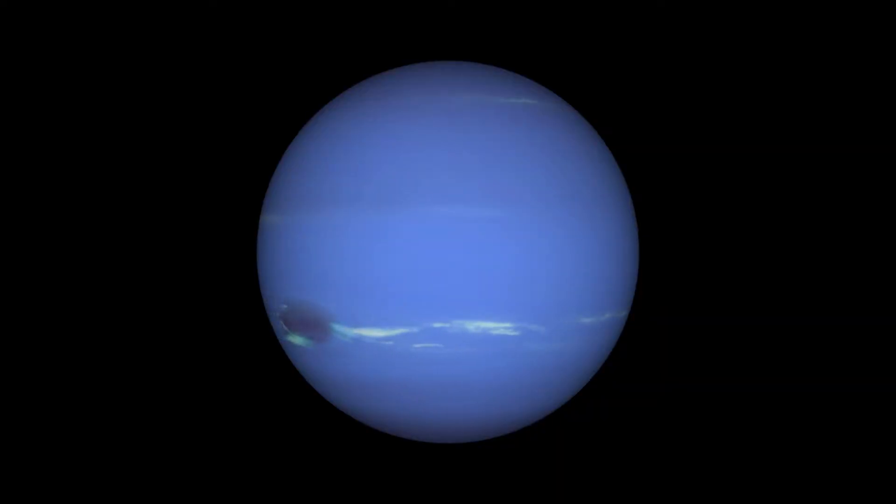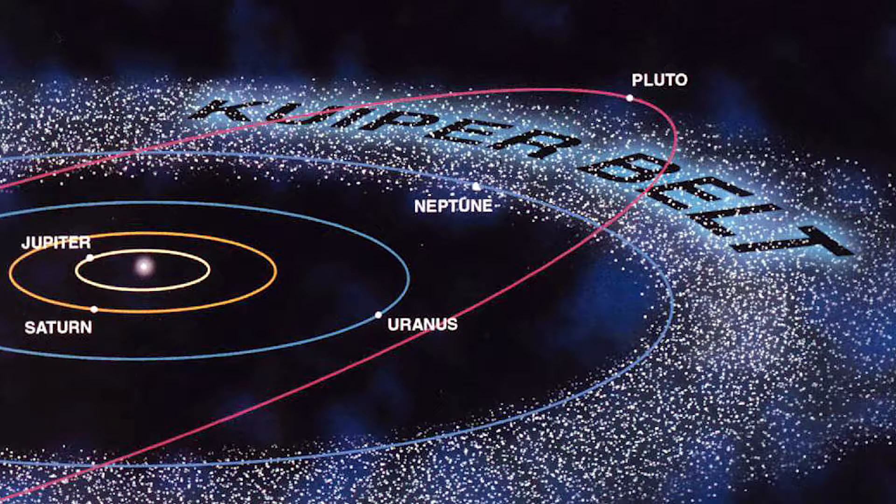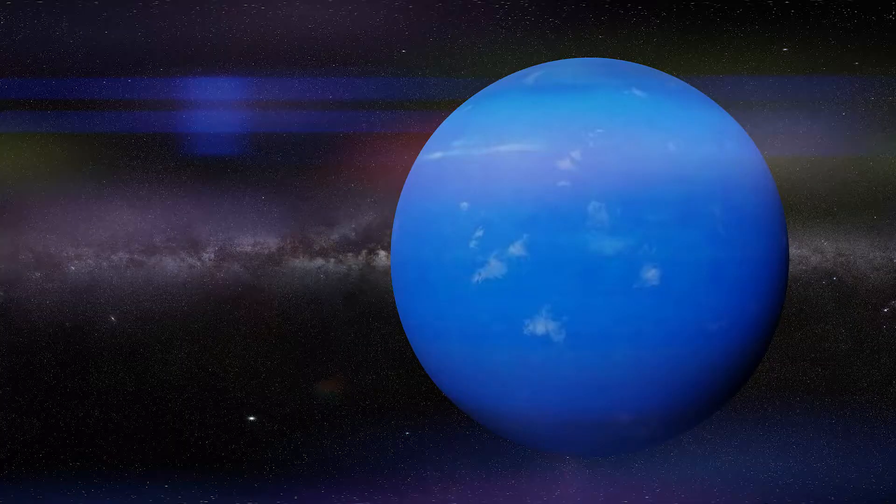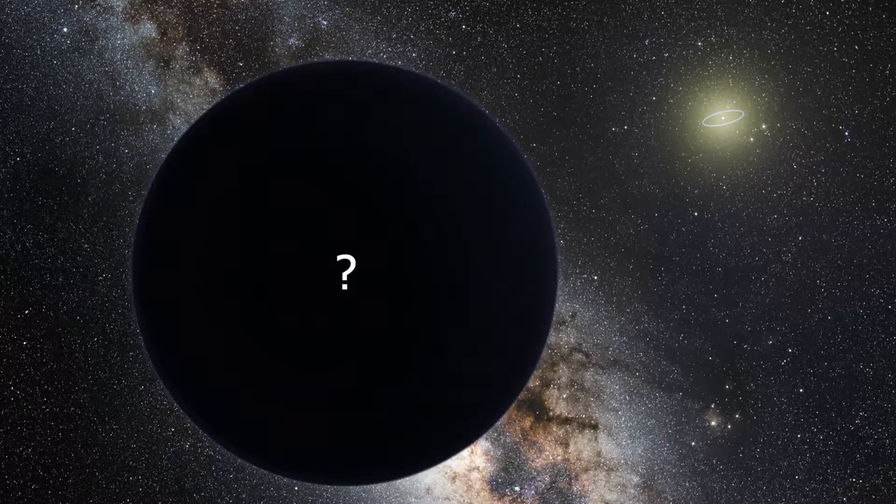Ever since Neptune was discovered in 1846, there was a question of whether another planet lay beyond it. Astronomers speculated this due to the slightly odd elliptical orbits of both Uranus and Neptune, suggesting there had to be something else pulling them.